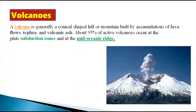A volcano is generally a conical shaped hill or mountain built by accumulation of lava, tephra, or volcanic ash. It is a particular conical shaped structure which has been formed due to substances coming from beneath the surface and reaching the surface of the earth.